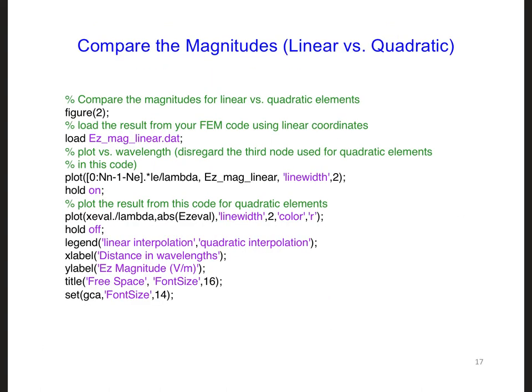Then we can plot the magnitude of Ez. And let's compare the result for this code using quadratic elements versus the code you wrote earlier having linear elements. To do this, run the linear FEM code first.